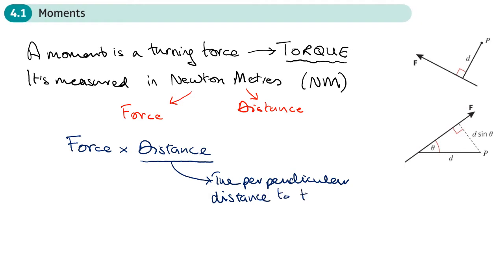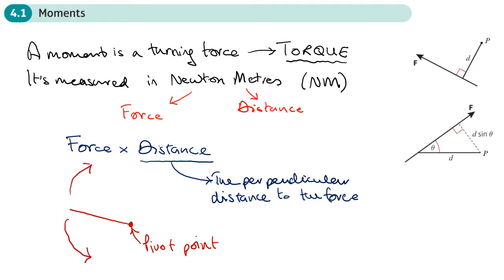For example, with moments you have a pivot point. Imagine a piece of wood nailed at this pivot point so it can rotate around it — either clockwise or anti-clockwise. If you apply a force at the end at a perpendicular distance d from the pivot point, then the moment of that force is calculated from that setup.